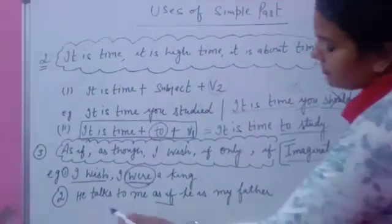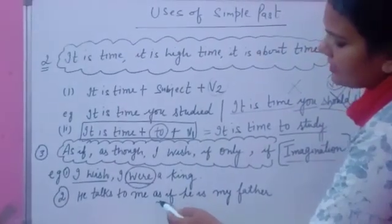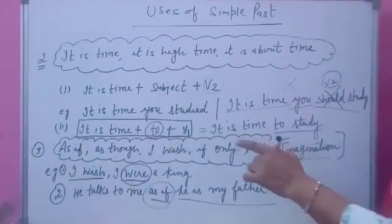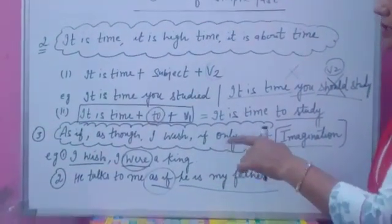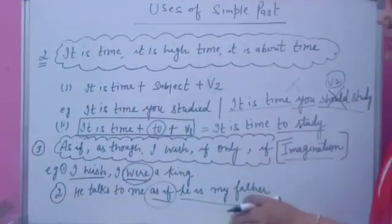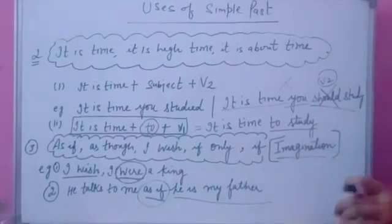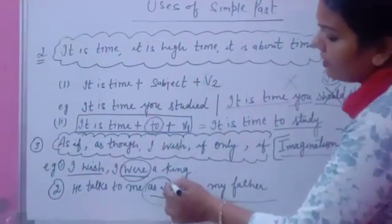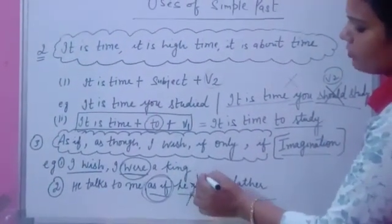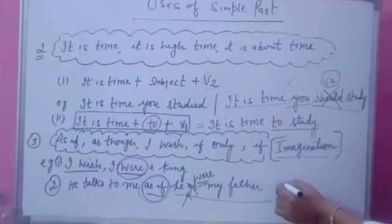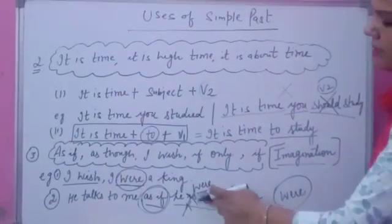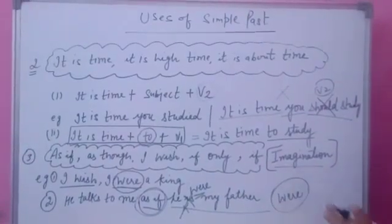In the second sentence, he talks to me as if he is my father. Now he is talking about not about his real father but a person who always reacts to him as his own father. It means that this sentence is showing imagination. That's why the tense is wrong here. At the place of is you will use were. Only were will be used here at the place of is and was. Not was will be here. Only were will be here.